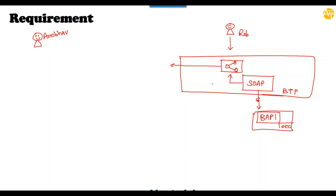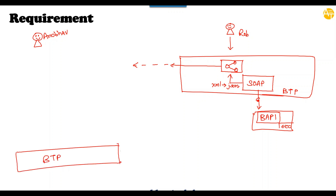The SOAP API usually returns XML data, which is also converted to JSON by Rob. So Anubhav has to use this simple plain REST API and then build an application in SAP BTP. Anubhav will be using the BTP platform, working as a solution architect and developer for the Fiori application, and he would like to now build a Fiori app.